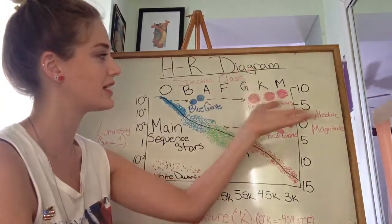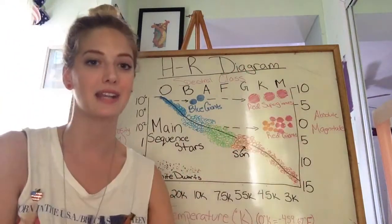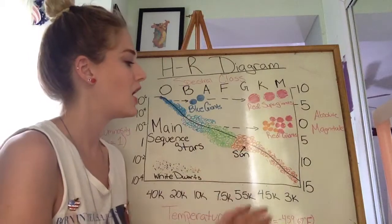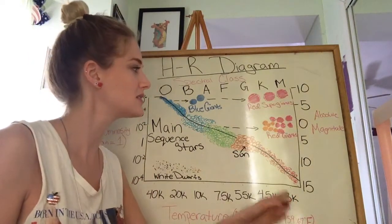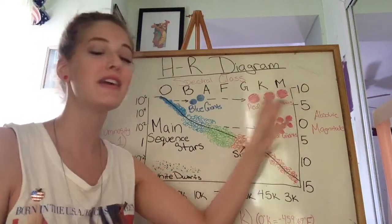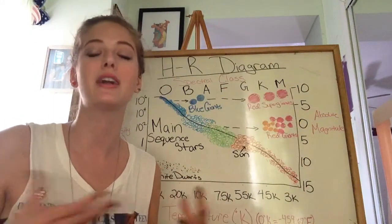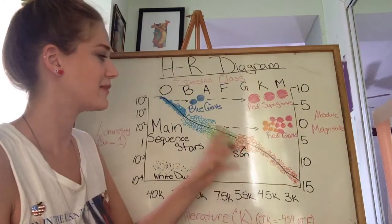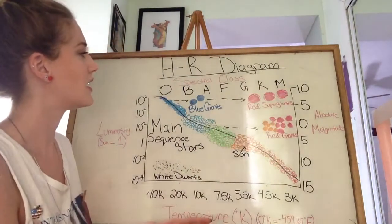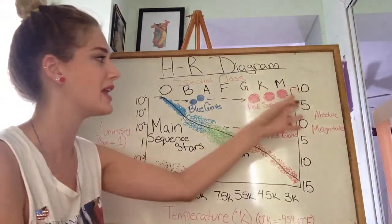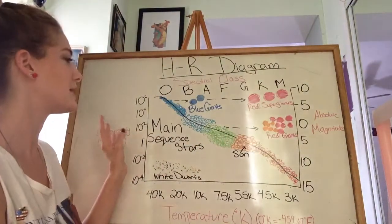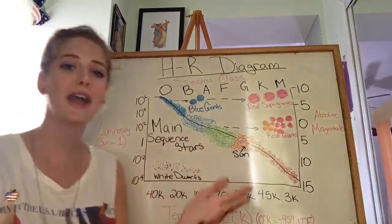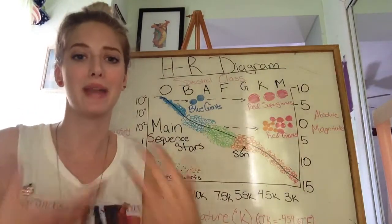I'll start with red supergiants and red giants. So these stars are pretty cool. They're only at about 3,000 Kelvin degrees. They're actually very large in size, very, very big stars. They're much bigger than our sun, on an absolute magnitude of negative 5, negative 10. And they're also relatively bright actually, and that's just because of how big they are.